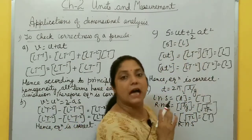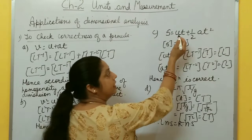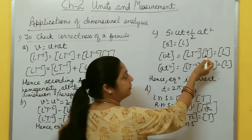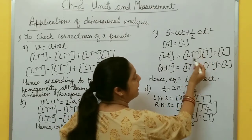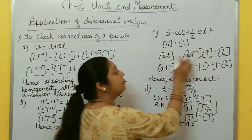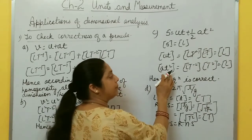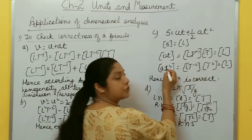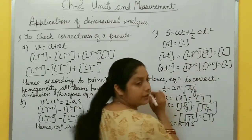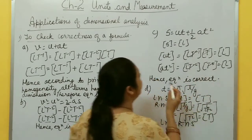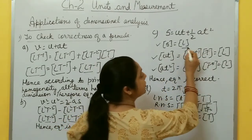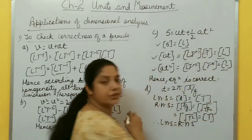One more: s = ut + ½at². Dimension of s is L. Dimension of ut is LT⁻¹ × T = L. Dimension of at² is LT⁻² × T² = L. Each term on the left-hand side and right-hand side has the same dimension L, so this equation is also dimensionally correct.